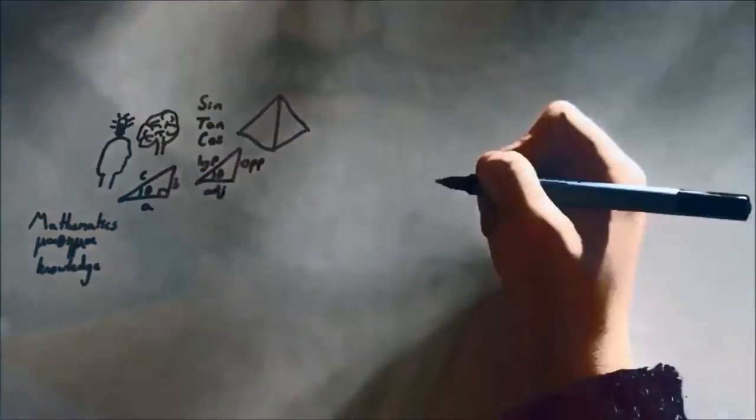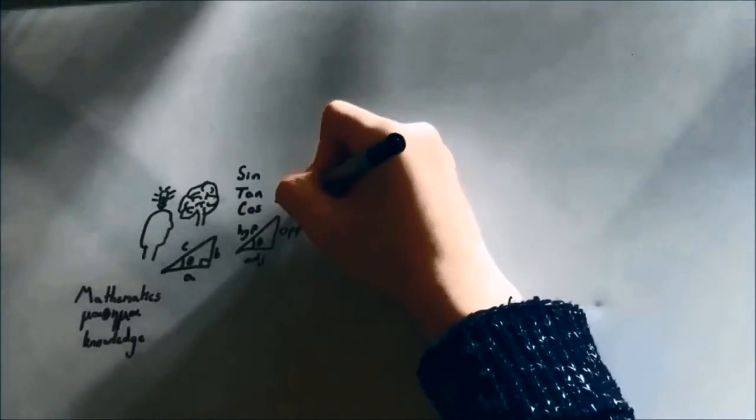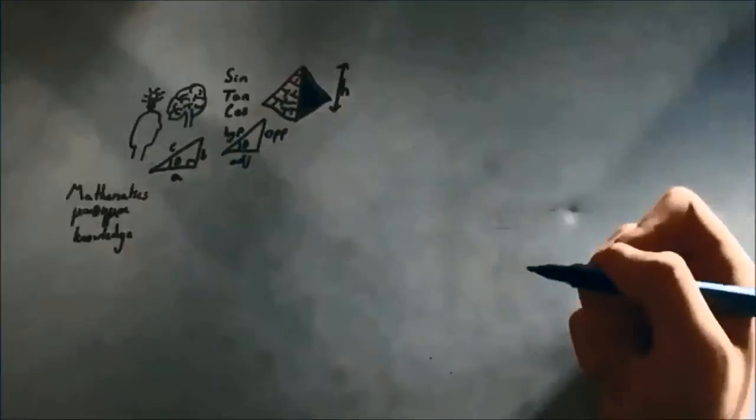The first well-known Greek mathematician was Thales of Miletus, who reputedly used trigonometry to calculate the height of the pyramids and the distance between ships at sea.